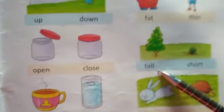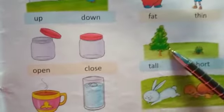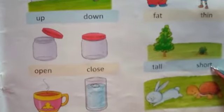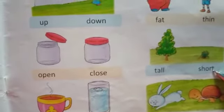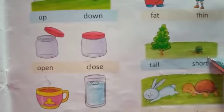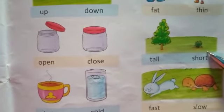Tall. T-A-L-L. Tall means lamba. Tall ka opposite hoga? Short. S-H-O-R-T. Short means chota.